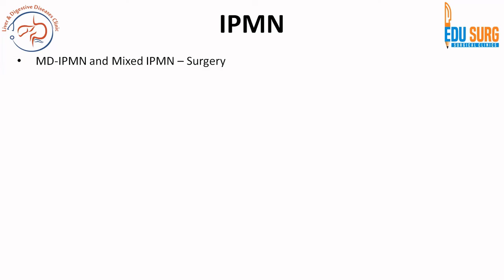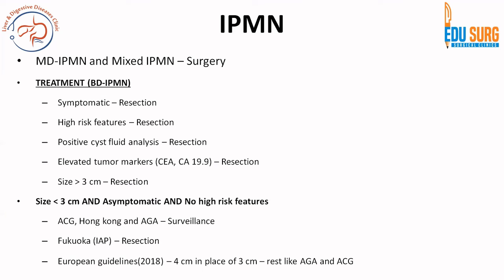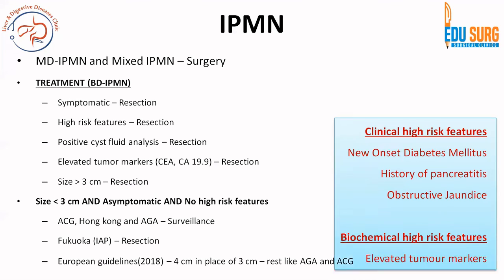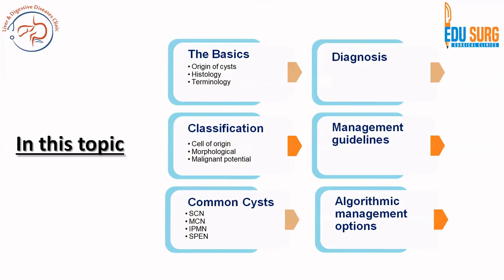To simplify the treatment guidelines: if it is main duct IPMN or mixed IPMN, the treatment is surgery. For branch duct IPMN, treatment is similar to mucinous cystic neoplasm. Up to 2 cm you can observe; 2 to 3 cm — resection as per Fukuoka guidelines; up to 3 cm observe and more than 3 cm resect as per American and Hong Kong guidelines; and 4 cm is the cutoff for European guidelines. High-risk features include clinical factors such as diabetes, obstructive jaundice, and pancreatitis attributable to the lesion, and biochemical features such as elevated tumor markers.